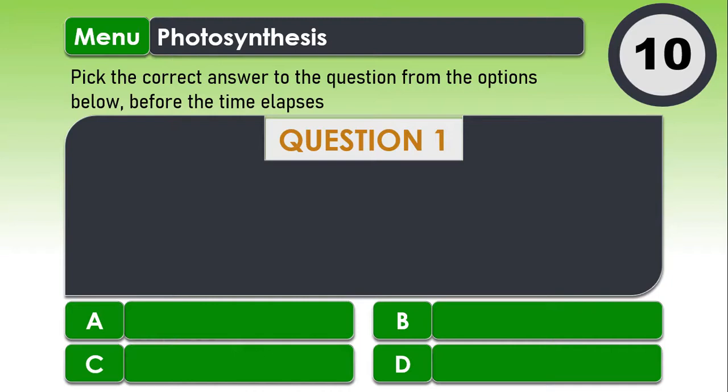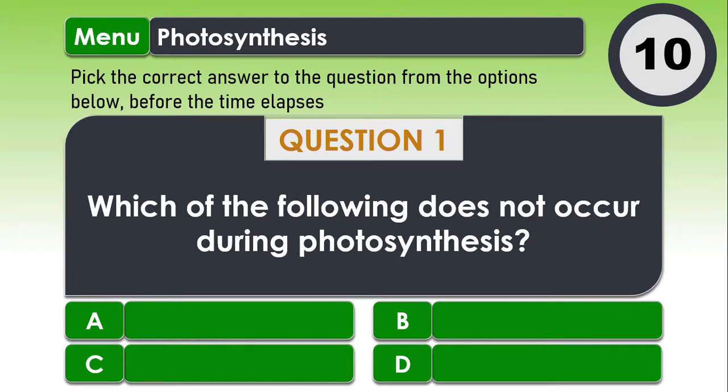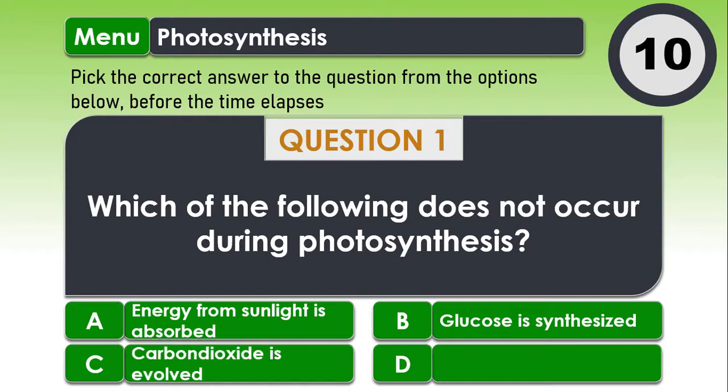Question 1. Which of the following does not occur during photosynthesis? A. Energy from sunlight is absorbed. B. Glucose is synthesized. C. Carbon dioxide is evolved.